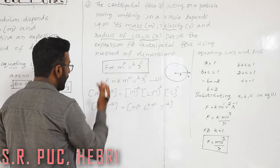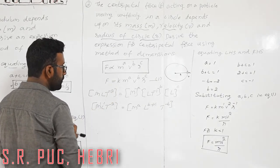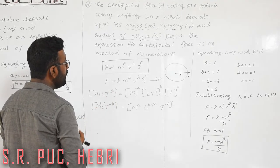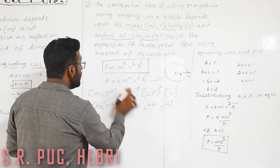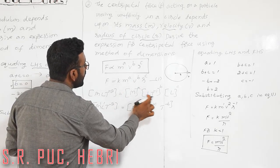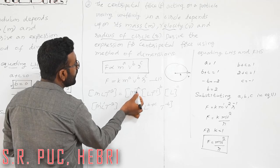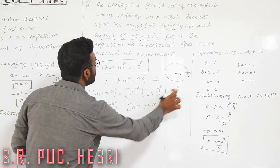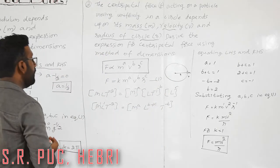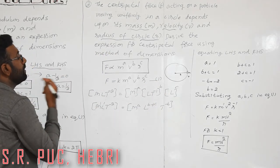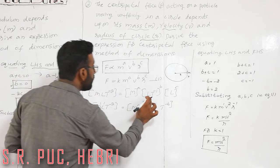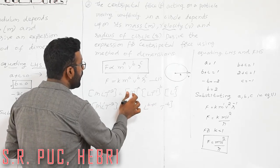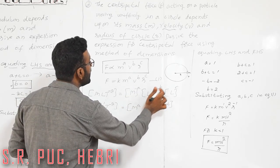Now substitute dimensional formulas. The dimensional formula of force is M L T⁻². On the right side: m is Mᵃ; velocity v is (L T⁻¹)ᵇ; radius r is Lᶜ. Expanding: M L T⁻² = Mᵃ · L^(b+c) · T^(−b).